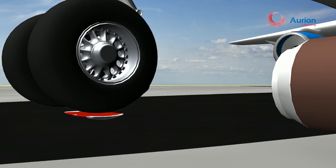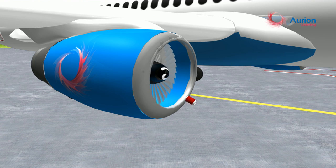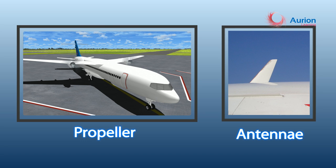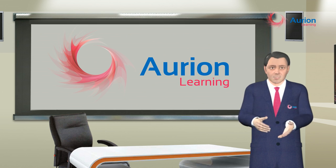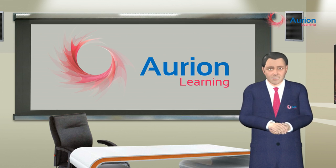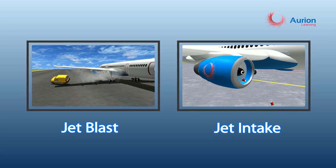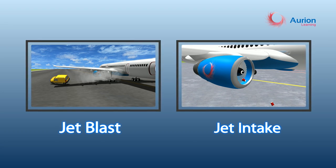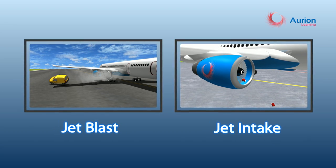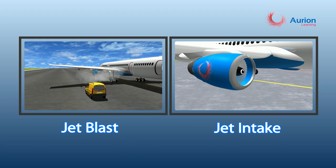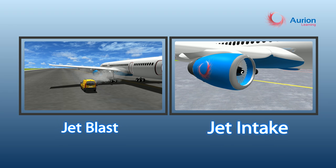Accidents at the airside occur due to aircraft hazards like engine hazards and parts of the aircraft like propellers and antennae. Let us understand each of them in brief. The most significant engine hazards are jet blast and jet intake, both of which can cause severe damage and danger to surrounding equipment, property, and life when in close contact.